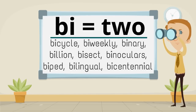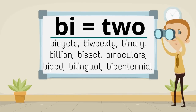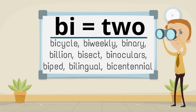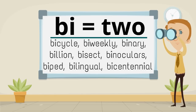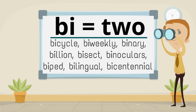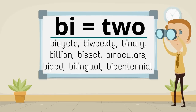Bi, meaning two, makes the words bicycle, biweekly, binary, billion, bisect, binoculars, biped, bilingual, and bicentennial.